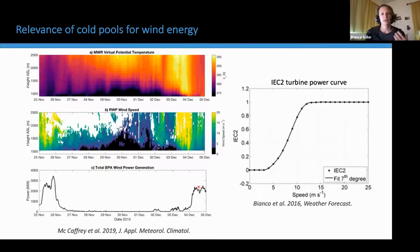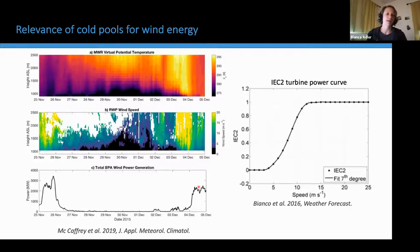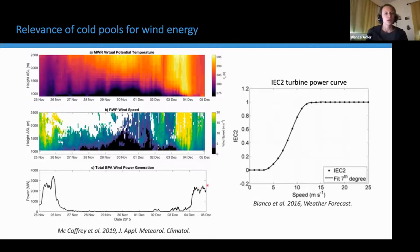This relationship makes it challenging to integrate wind energy during cold pools into the electrical grid, and accurate forecasts of these cold pool events are very crucial. However, models still struggle with that — partly because cold pools occur in complex terrain, which is challenging for all kinds of models. The multi-scale processes involved in cold pool evolution, maintenance, and decay also impose a challenge. To address these challenges, the second Wind Forecast Improvement Project, short WFIP2, was initiated in 2015 by the Department of Energy.